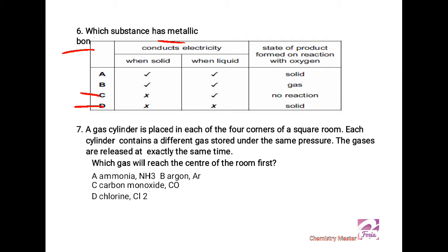Now we have to see state of the product formed on reaction with oxygen. Let's suppose we have iron in our mind. Iron is a metal, it conducts electricity when it is solid and when it is liquid, and it also forms Fe2O3, iron oxide, which is a solid, so option A is the correct one. But I have to discuss option B - all the conditions seem right, but when I see the gaseous product upon reacting with oxygen, that is a wrong clue.